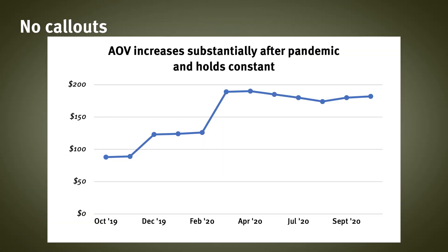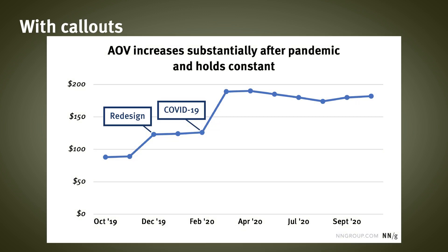Let's imagine we're working on an e-commerce site that sells children's clothing and toys. We have physical stores in addition to our e-commerce site, and we've been tracking average order value, or AOV, over the past few years. Average order value increased slightly after a redesign in December 2019, but spiked substantially when the 2020 pandemic caused booming e-commerce demand. We can add callout annotations on top of the chart to help our viewers see and remember where those events occurred.